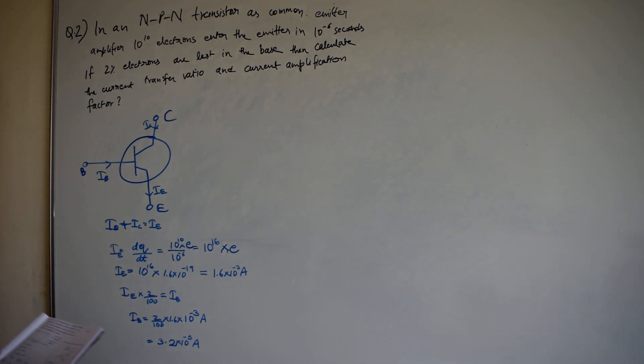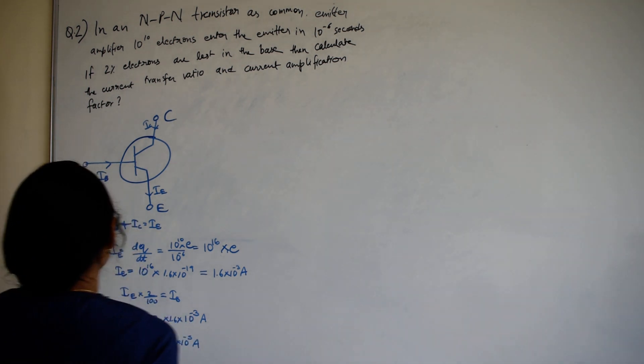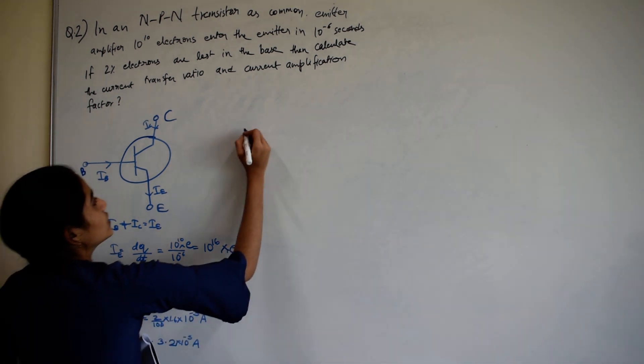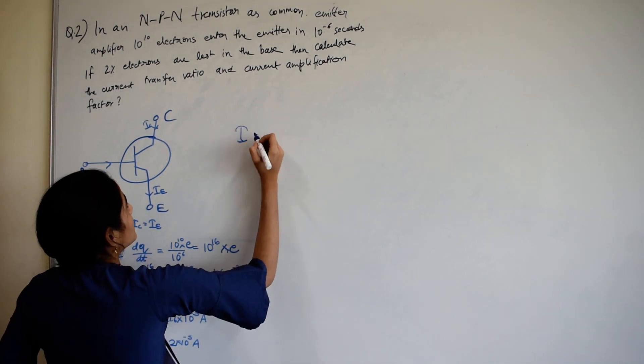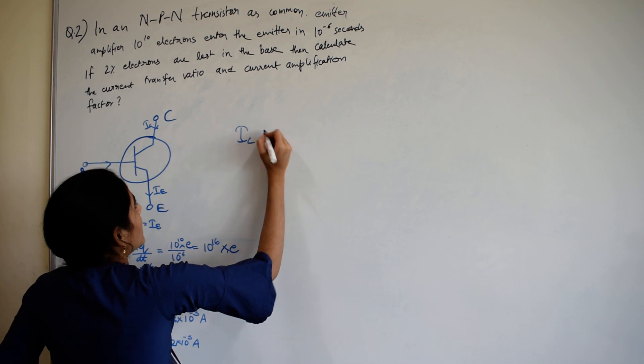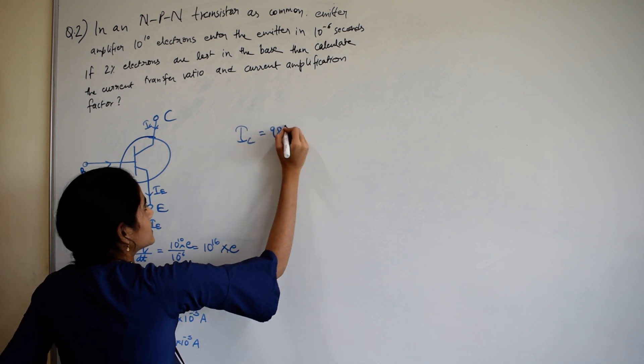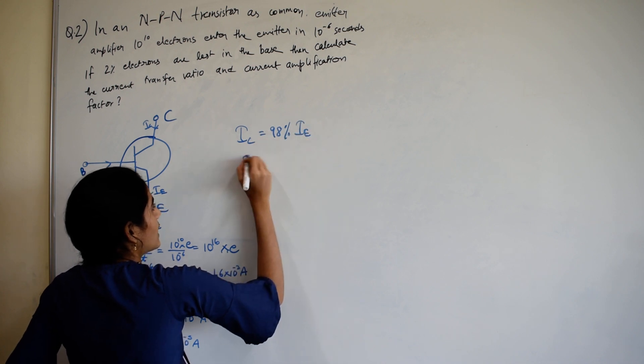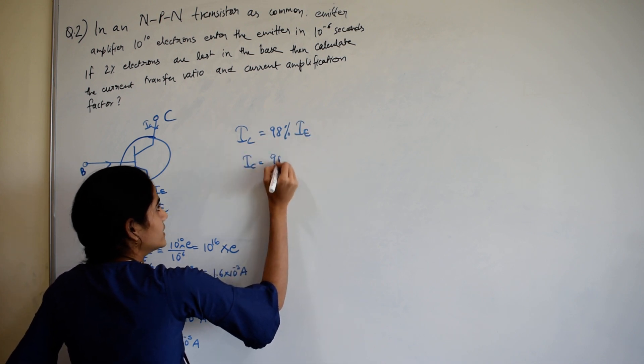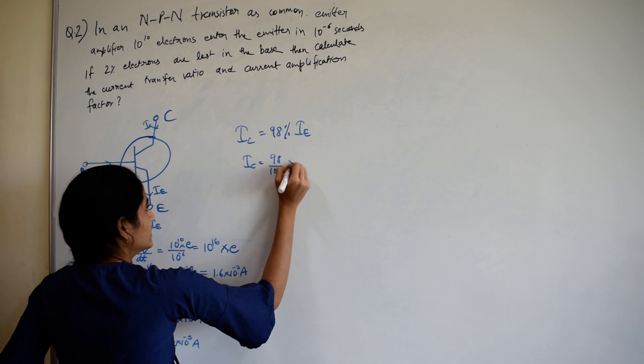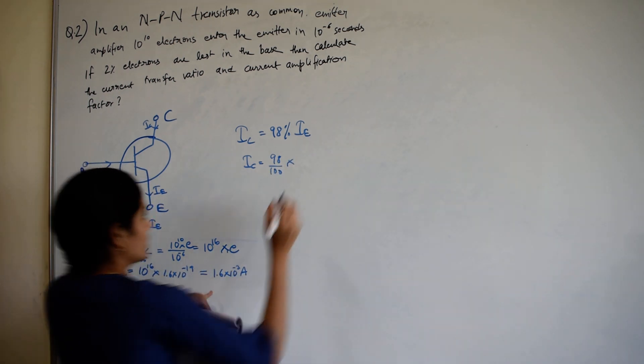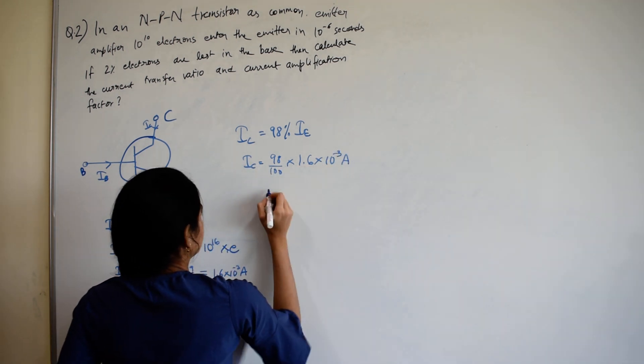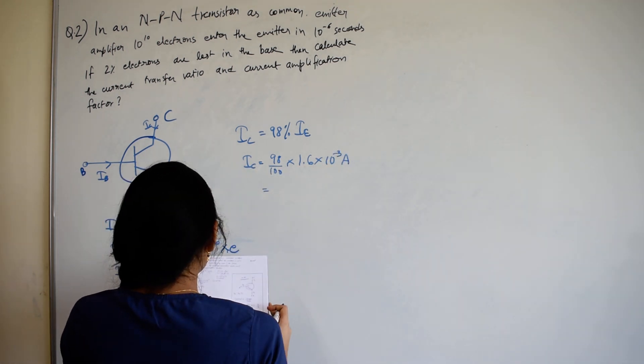So 2% of current goes to base, so 98% current goes to collector. IC equal to 98 divided by 100 into IE, 1.6 into 10 raised to minus 3 amperes.